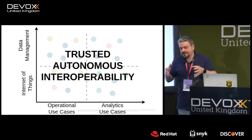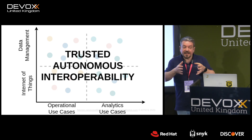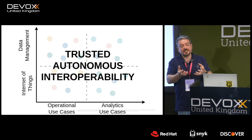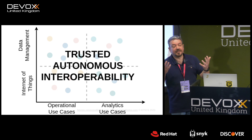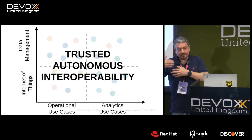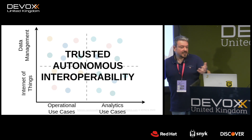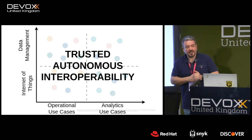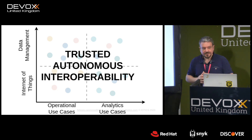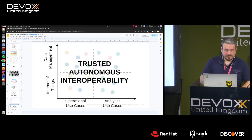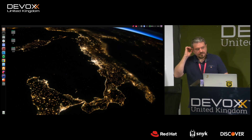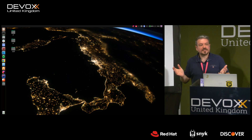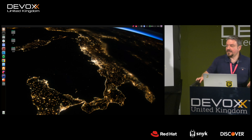Sovereignty means a digital twin exposes only what it decides to expose. To be found, it publishes semantically described metadata reflecting the search parameters it wants to be found by. Access control ensures only allowed twins receive specific data. Thank you very much — if you have more questions, find us around today and tomorrow.